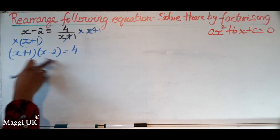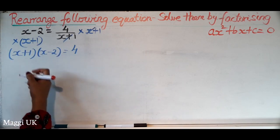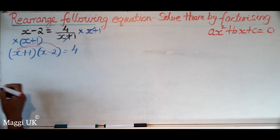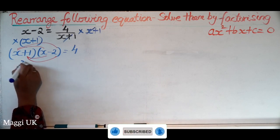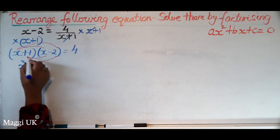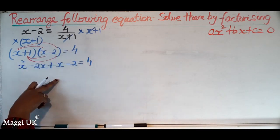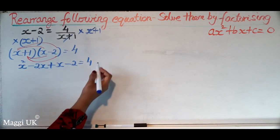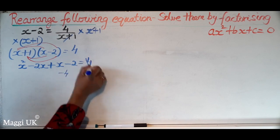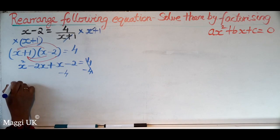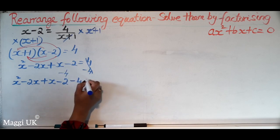Now we need to expand this using the FOIL method. Expanding gives x squared minus 2x plus x minus 2 equals 4. We bring the 4 to the left hand side as minus 4, so we have x squared minus 2x plus x minus 2 minus 4 equals 0.